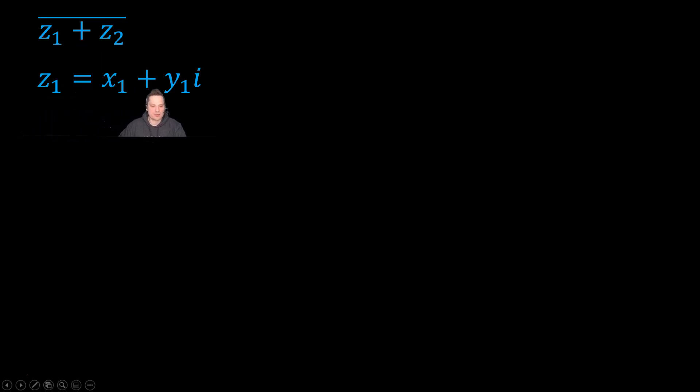First of all, remember that z sub 1 could be defined as x sub 1 plus y sub 1 i. That's the definition of a complex number in its basic form. That means that z sub 2 can be defined as x sub 2 plus y sub 2 i. So these are the details that we will need to make use of.